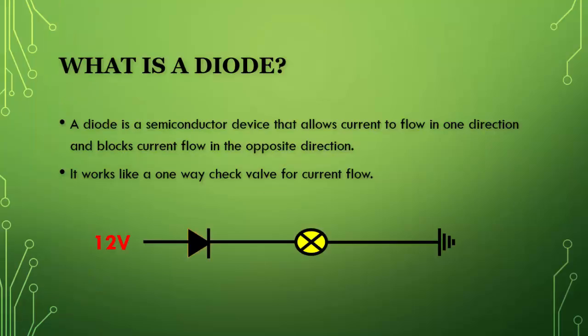So the first question is, what is a diode? A diode is a semiconductor device that allows current to flow in one direction and blocks current flow in the opposite direction.